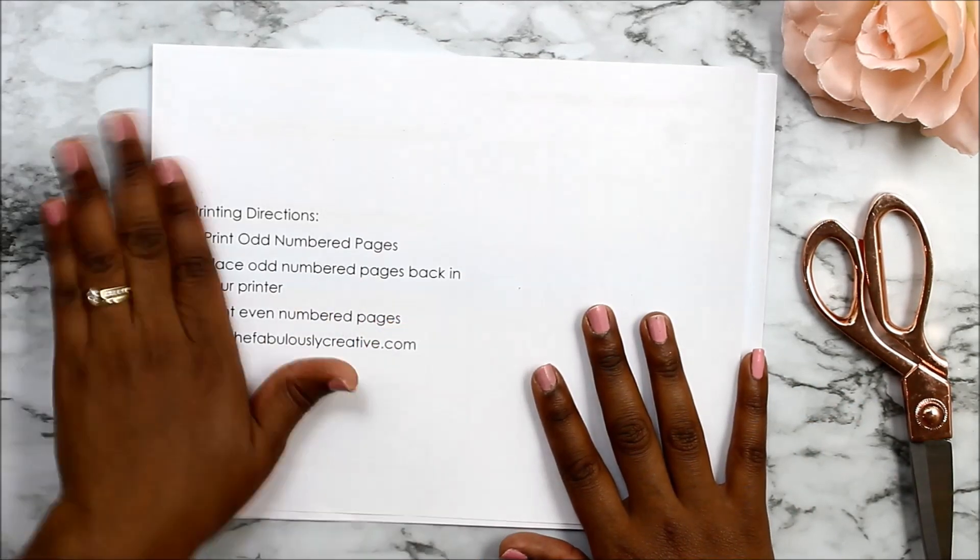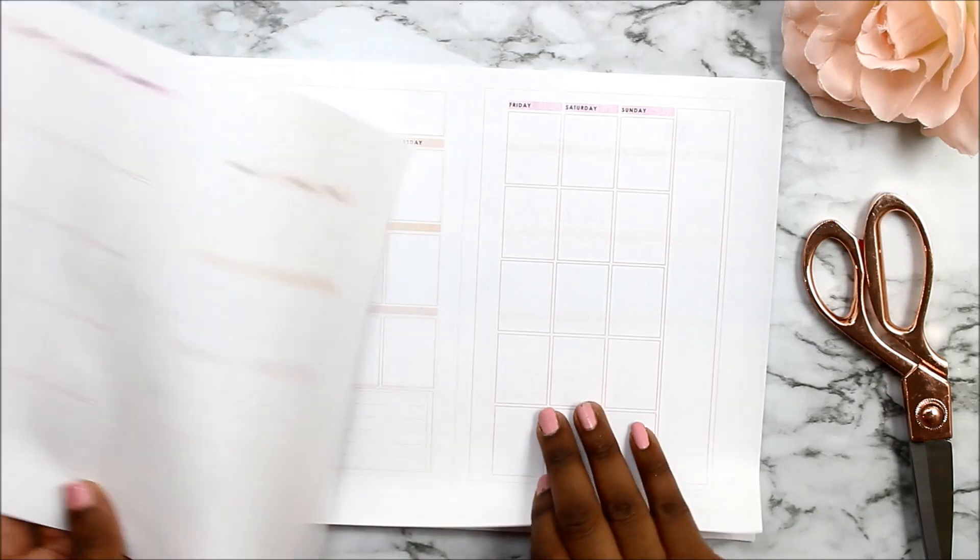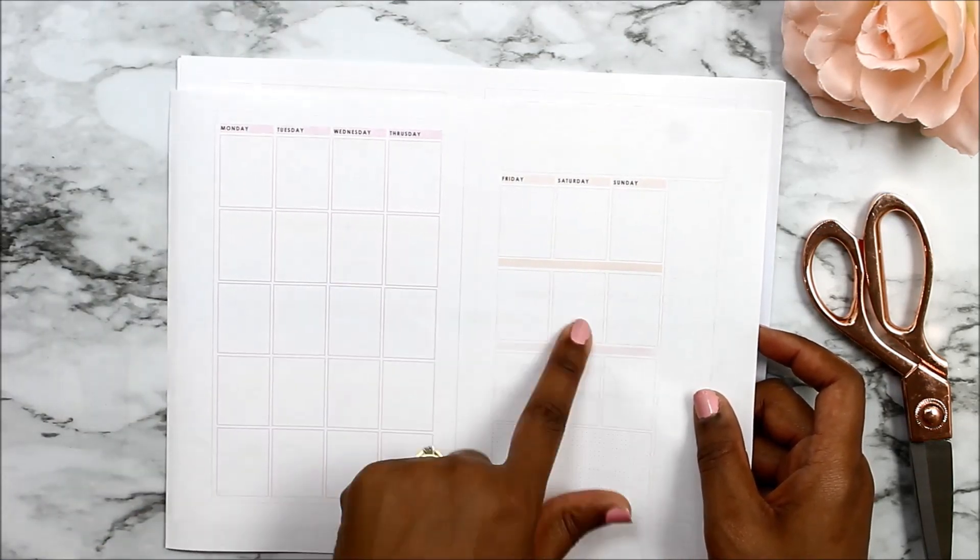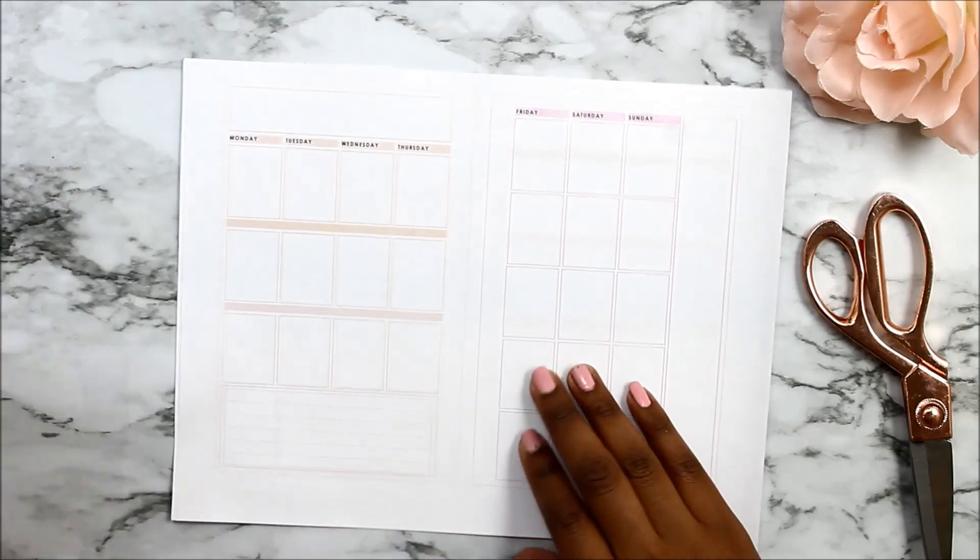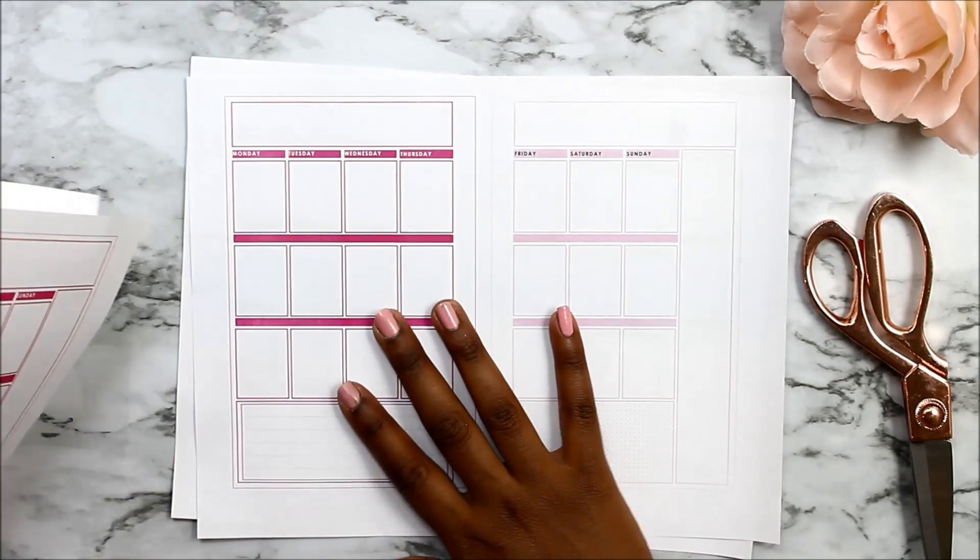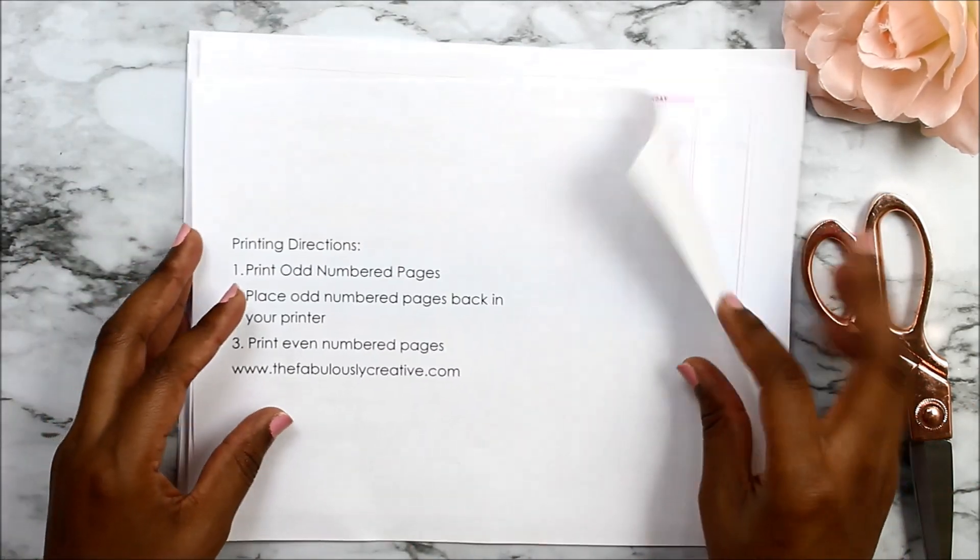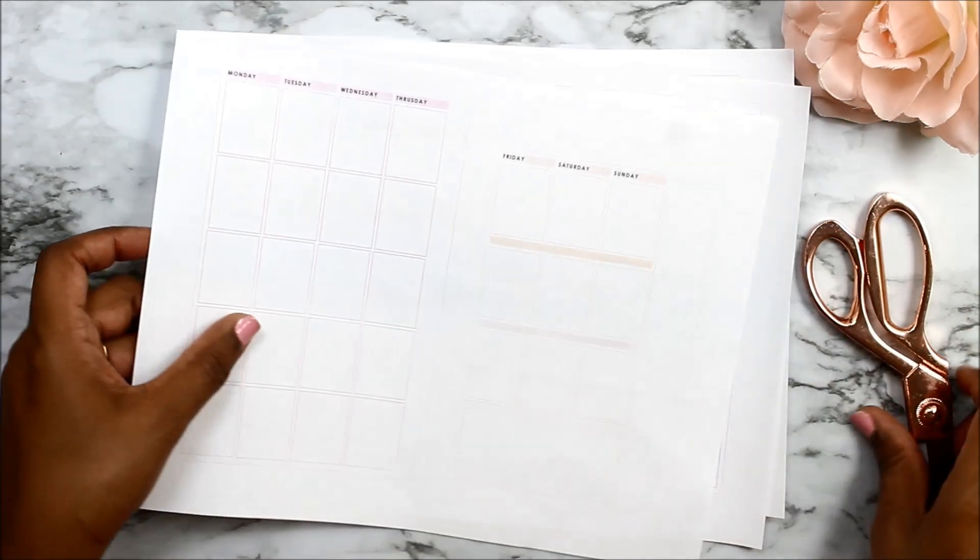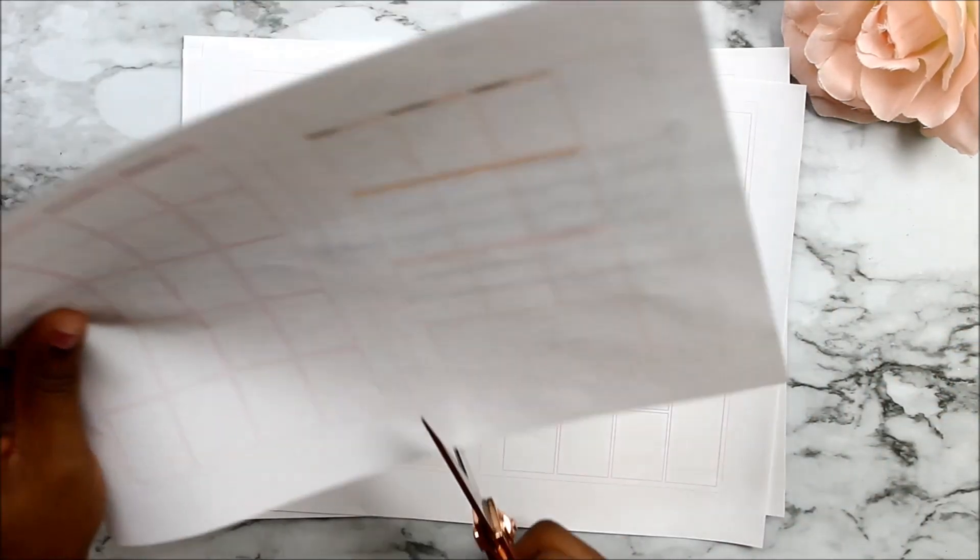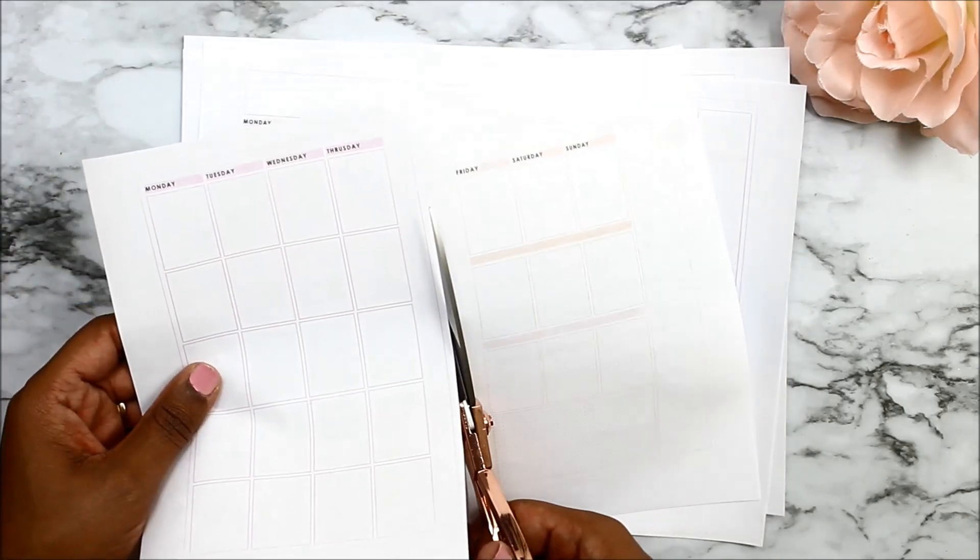Once you have everything out of your printer, this is how it will look. The first thing you will notice is there are two different colors on each page. At first glance it looks like they don't really match, you see dark pink, light pink on this side. So the first thing I do is just cut them all down the middle.